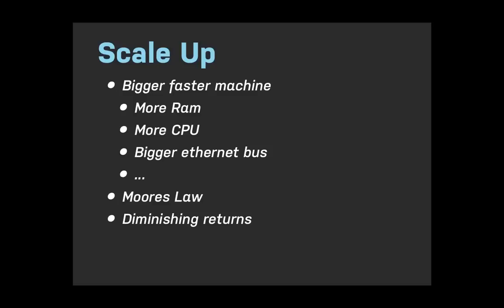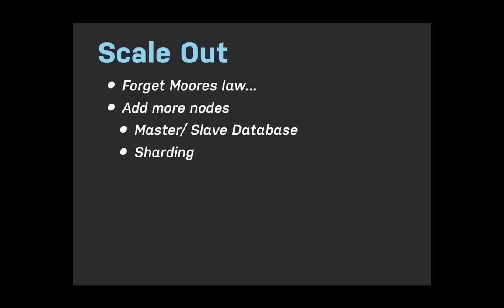In addition to scaling up, we can scale out — this is the computer scientist's dream. We just add more nodes, scaling horizontally. Every time you need more power, you add additional nodes. For a database, that can mean one of two things: a master-slave database architecture, or sharding our database.